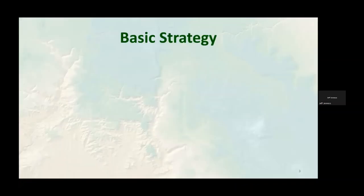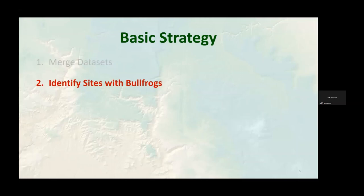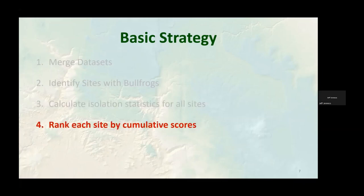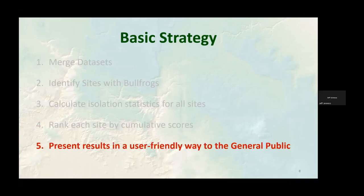We had five steps in our basic strategy. First, we combined eight different datasets of water site locations and survey data into a single point dataset. Second, we identified which sites had bullfrogs — more challenging than it sounds because each dataset reported this differently. Next, we calculated statistics that would contribute to successfully eradicating bullfrogs and reintroducing northern leopard frogs, mostly variations on isolation from other water sites or bullfrog locations. Then we assigned ranks to each site; sites with the lowest cumulative ranks would be most promising for bullfrog eradication. Finally, we generated web maps to share results with the public.